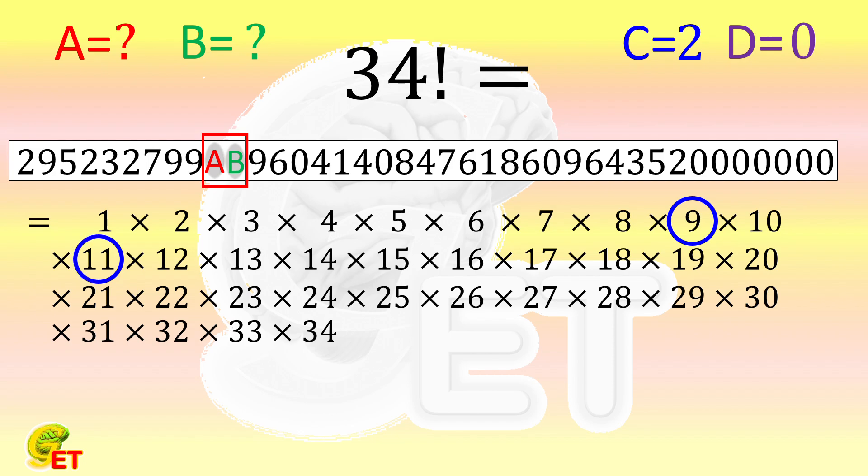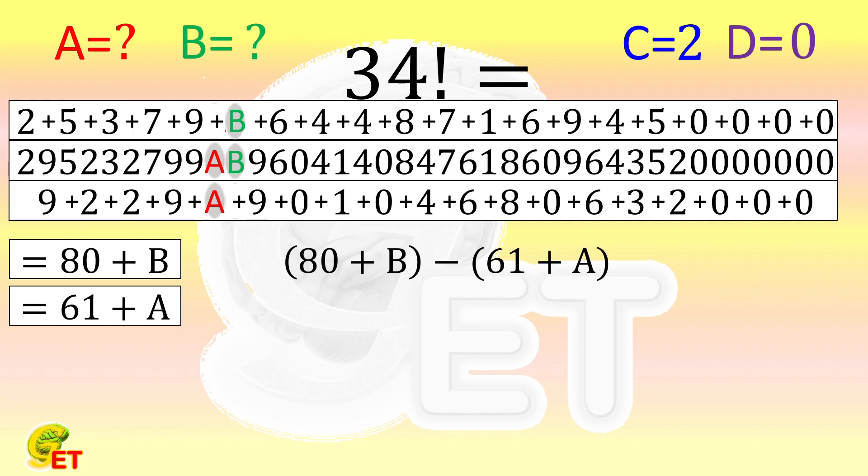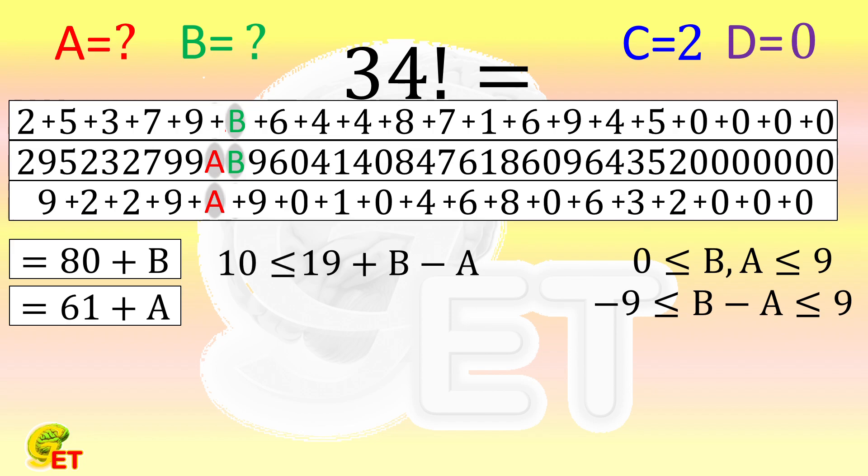Considering the divisibility by 11, we need to add up all the digits at odd places, and all the digits at even places of this number separately. The results are 80 plus B, and 61 plus A respectively. Their difference equals to 19 plus B minus A, which should be divisible by 11. Now, please don't forget that, as decimal digits, A and B should range between 0 and 9. Then B minus A should range between minus 9 and 9. The range of 19 plus B minus A is therefore between 10 and 28. There are two numbers that can be divisible by 11 in this range, and they are 11 and 22. That is to say, B minus A may be equal to minus 8, or it may be equal to 3.